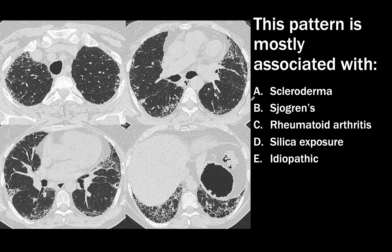The final question in this set is: what disease is this pattern mostly associated with? Most cases of UIP are idiopathic, i.e., secondary to IPF — idiopathic pulmonary fibrosis — and the correct answer is E. You might also say this is associated with rheumatoid arthritis, and you'd be right, but most cases are in fact idiopathic.